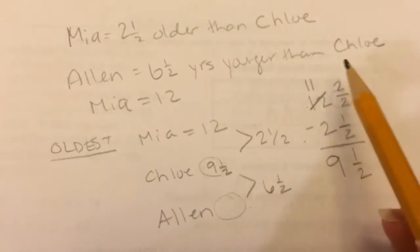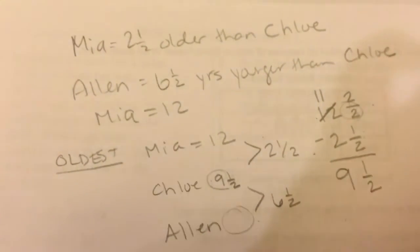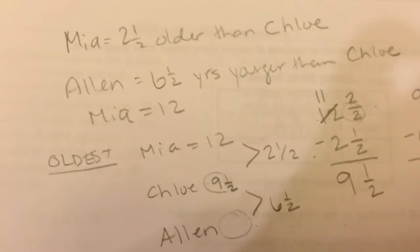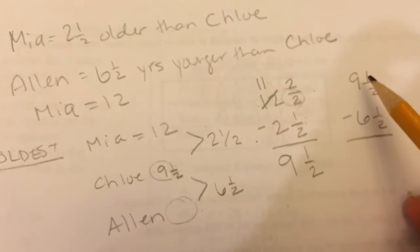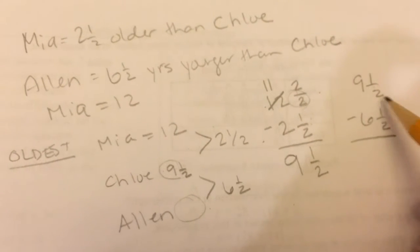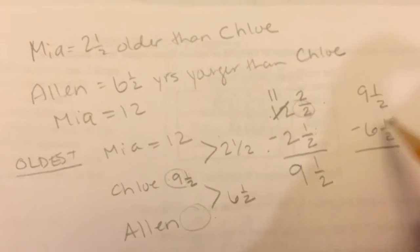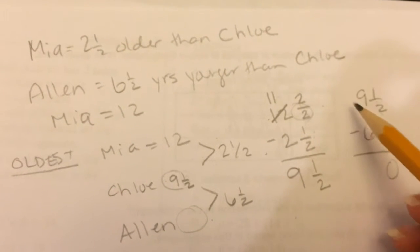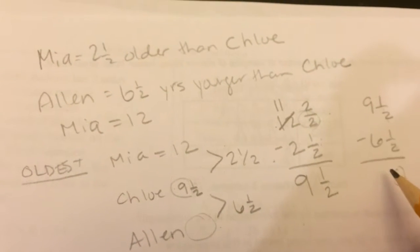But now it says Alan is 6½ years younger than Chloe. So Chloe is 9½, and we're going to take away Alan's 6½. Well, one half minus one half, they have the same denominator. One half minus one half is zero. That goes away. So 9 minus 6 is 3.